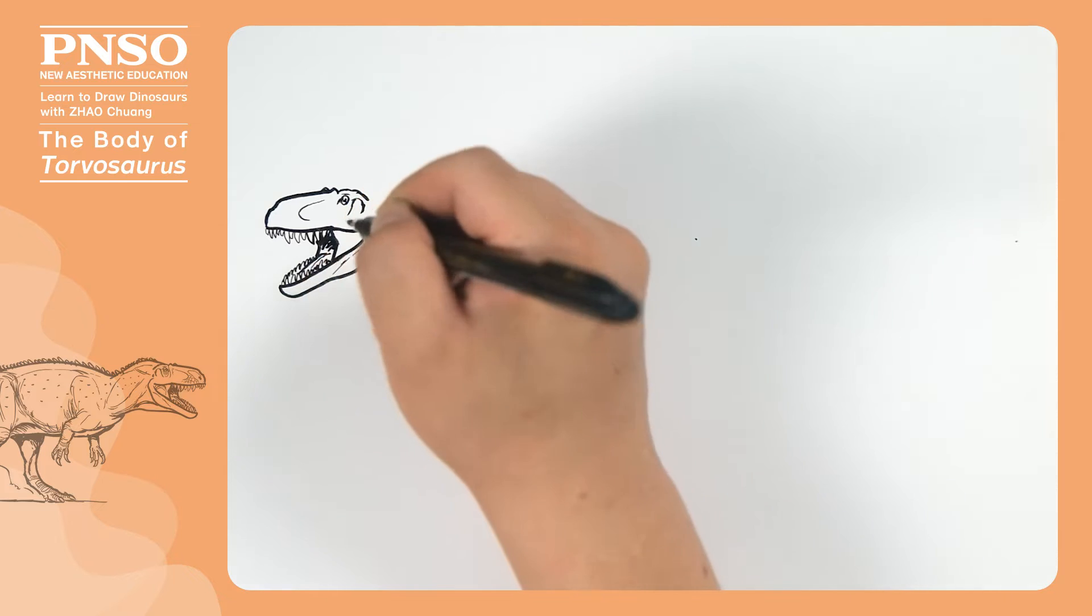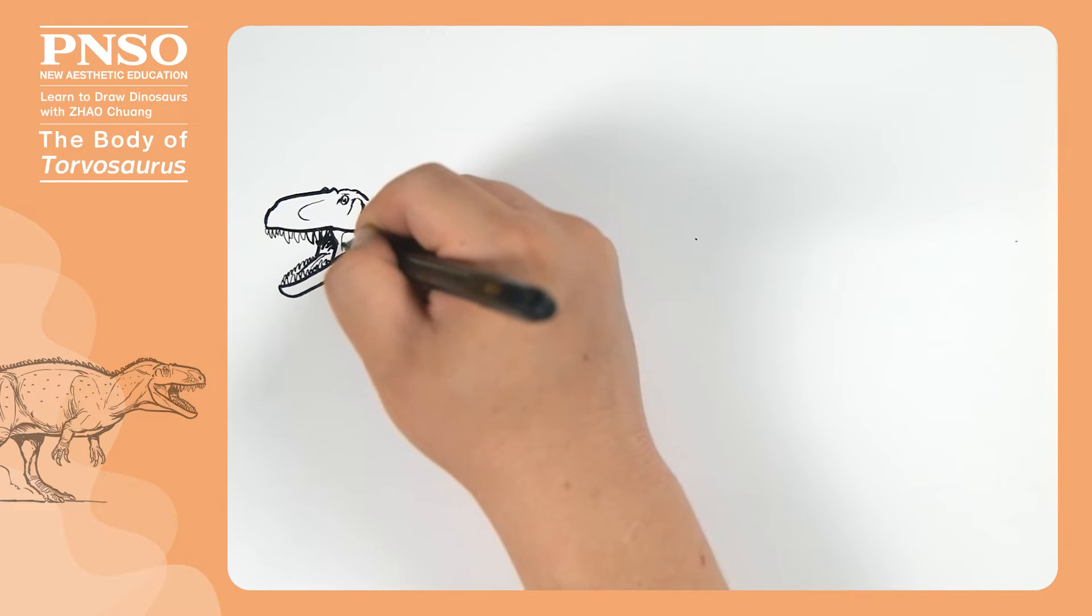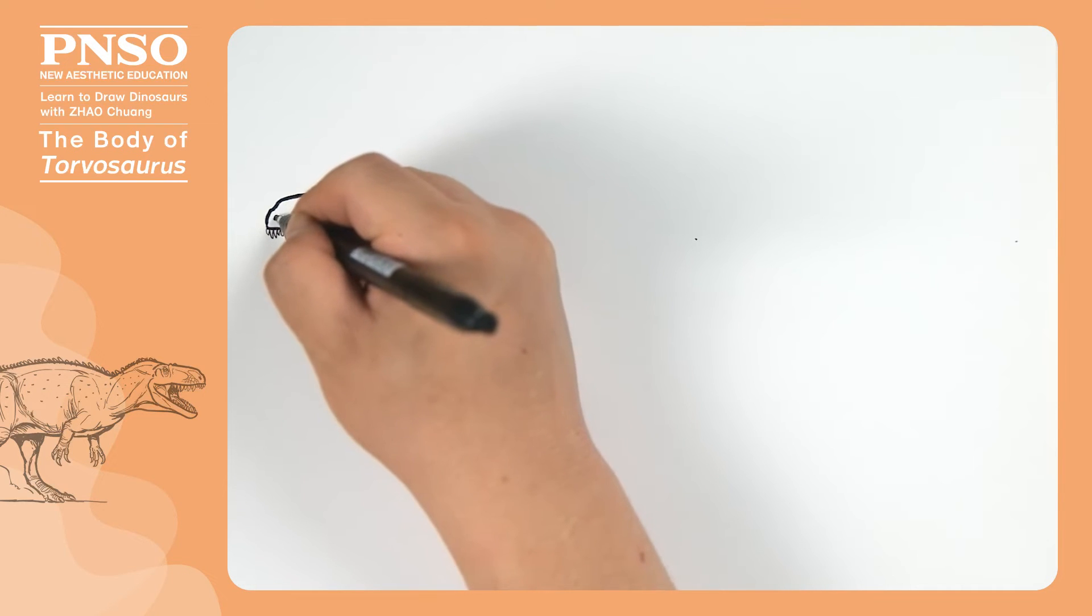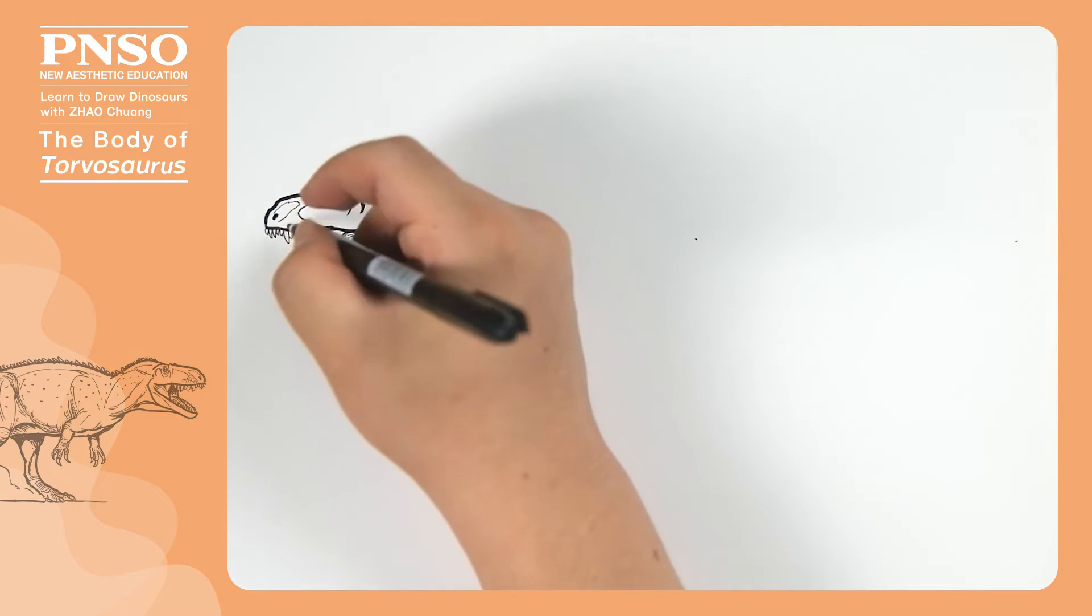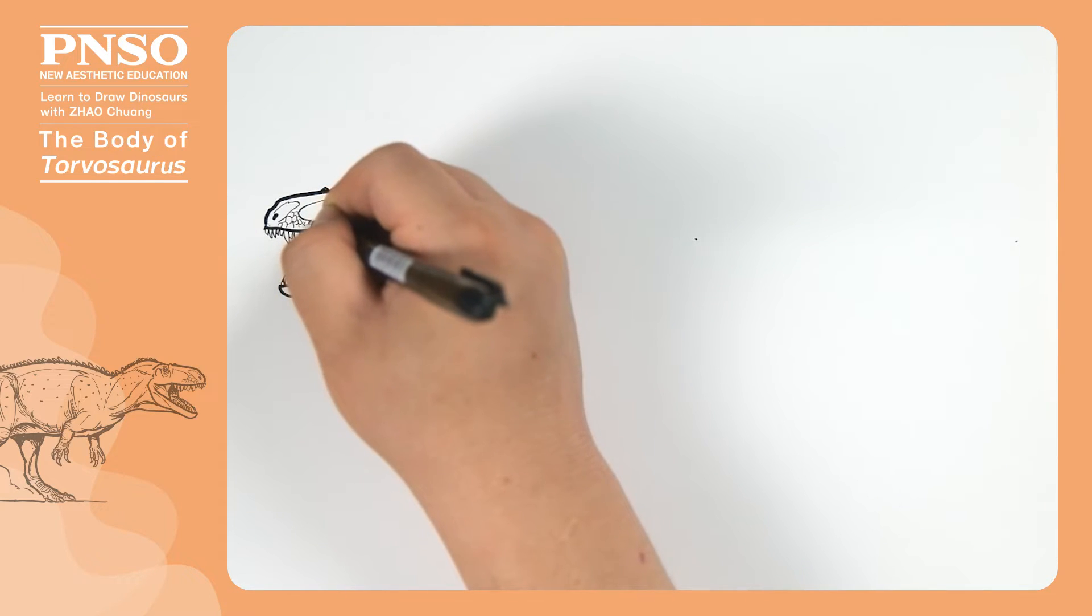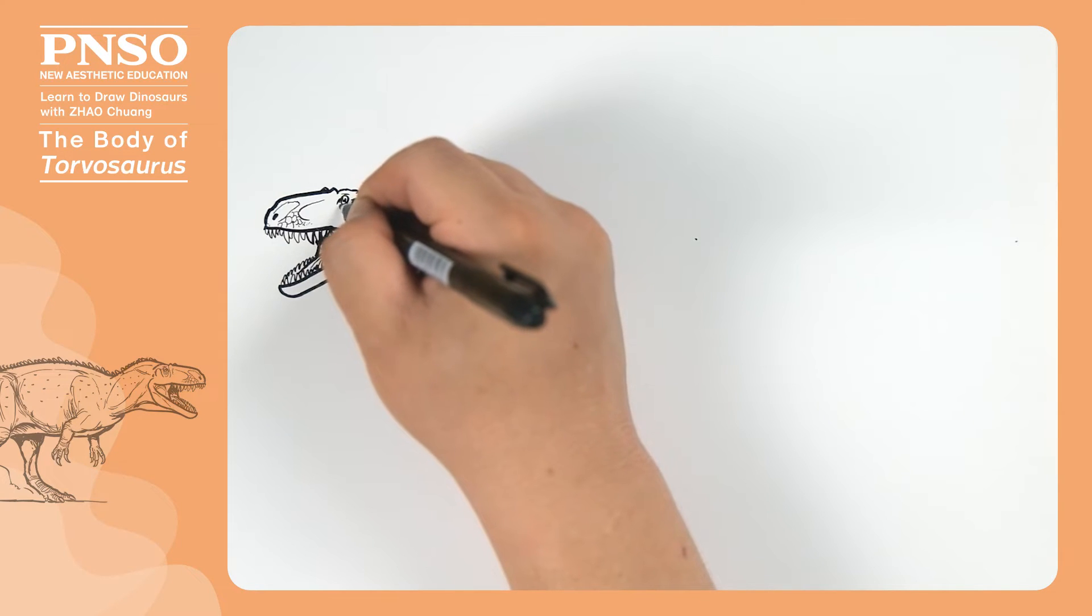Then move on to its tongue. And the muscles at the mouth. The muscles here can be given a fuller look. At the front, there was a nostril with a large area of soft tissue. Then draw some large scales at the front of the mouth. Draw some folds below the eyes.